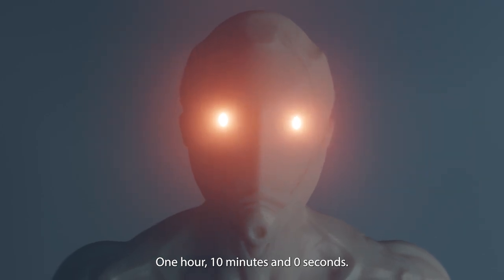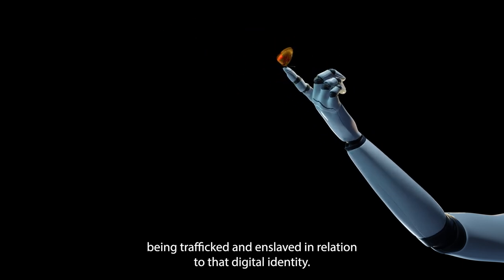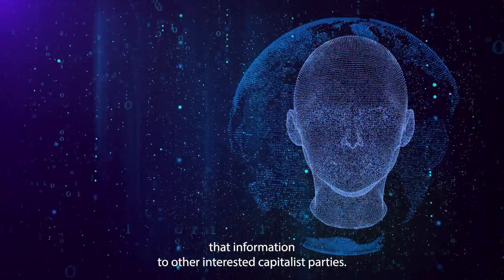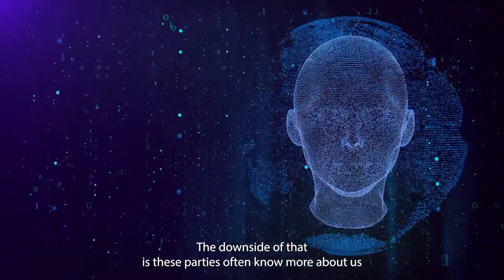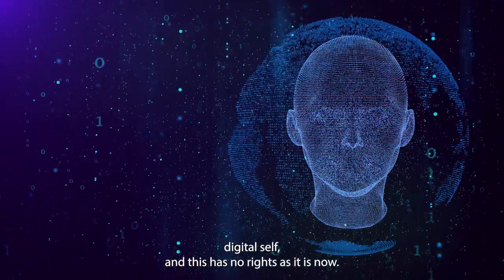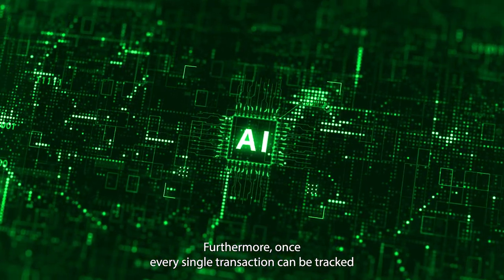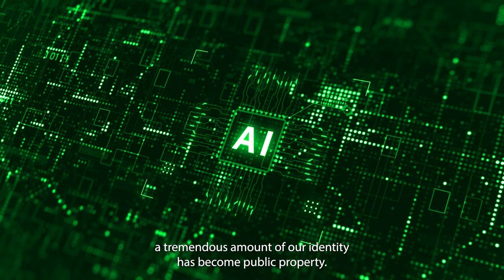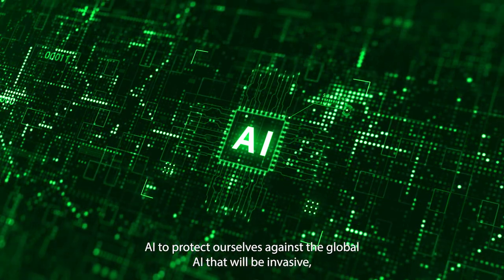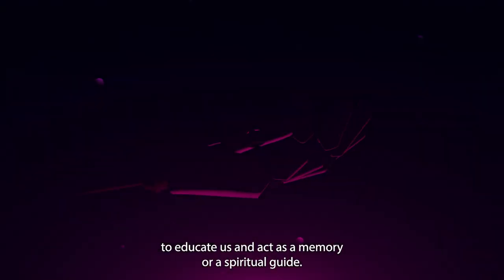The speaker discusses how much of our identity has become digital and how we are already being trafficked and enslaved in relation to that digital identity. Credit card companies watch how we behave and broker that information to other interested capitalist parties. The downside of that is these parties often know more about us than we know about ourselves. The speakers suggest that we each need our own AI to protect ourselves against the global AI that will be invasive, but our AIs could be utilized in the best possible ways to educate us and act as a memory or a spiritual guide.